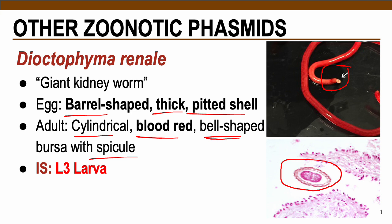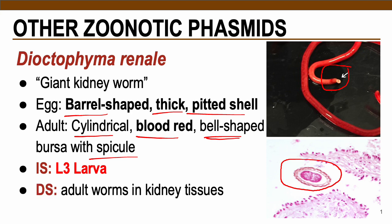Just like other zoonotic nematodes, the infective stage of this parasite is the L3 larva. The diagnostic stage is the adult worms, usually seen in kidney tissues. Also take note that eggs may also be present in the kidney tissues and can be viewed using tissue biopsy.